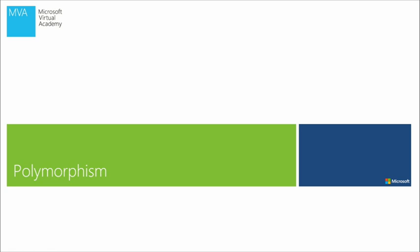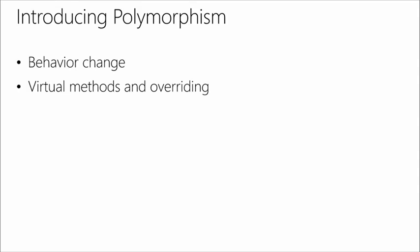We also want to talk about polymorphism — another key aspect of object-oriented programming. If you break the word down, poly means many or multiple, and morph means to change. So essentially, polymorphism means we can have multiple, different versions of the same thing. In terms of classes, polymorphism means a behavior change or an attribute change — we can customize what our subclasses do.